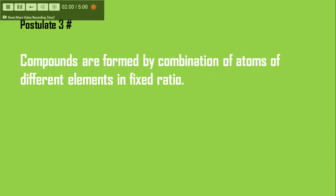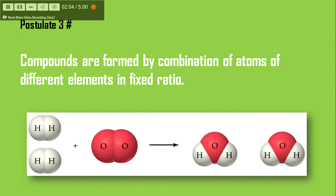The next postulate is that compounds are formed by the combination of atoms of different elements in a fixed ratio. For example, water is formed by the combination of hydrogen and oxygen. Atoms of hydrogen and oxygen combine in a ratio of 2:1 — one oxygen atom and two hydrogen atoms — so the ratio is 2:1.